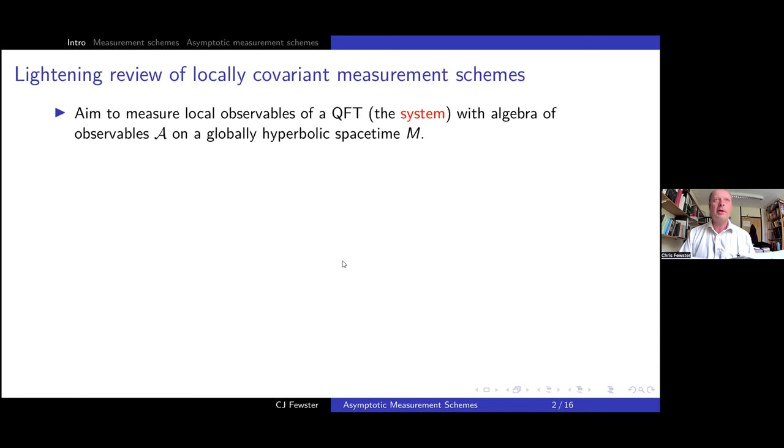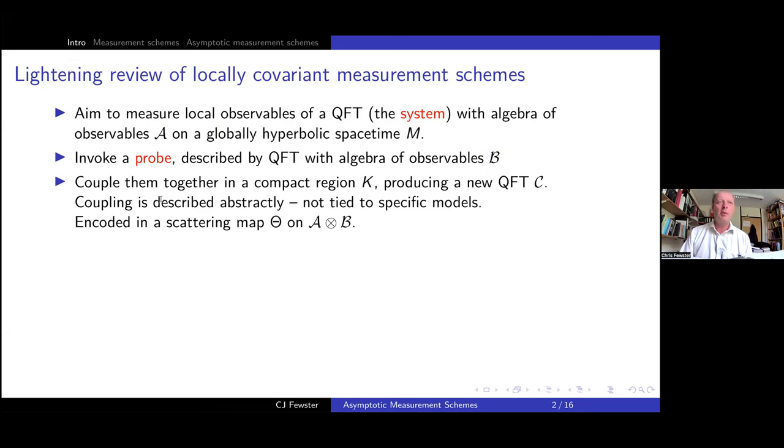I'm going to start by giving you a lightning review of locally covariant measurement schemes. The basic aim here is to measure local observables of one quantum field theory, which we'll call a system, and it's going to be on a globally hyperbolic spacetime M with an algebra of observables A. The way we do it is by invoking a probe, which is also going to be a quantum field theory with algebra of observables B living on the same spacetime. We're going to couple them together in some compact region K, and because we've changed the dynamics, this gives us a new quantum field theory C.